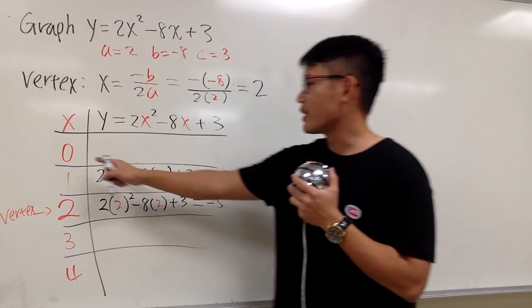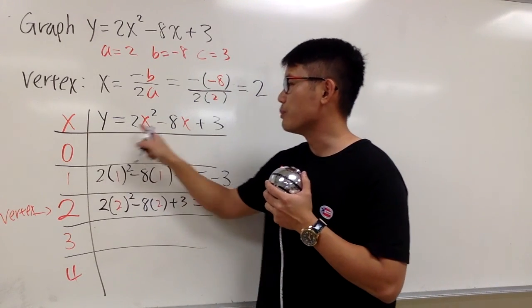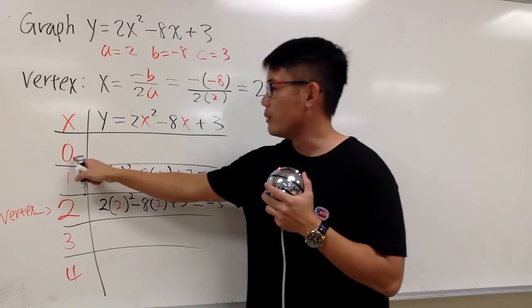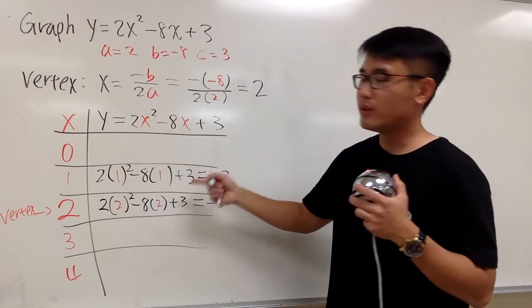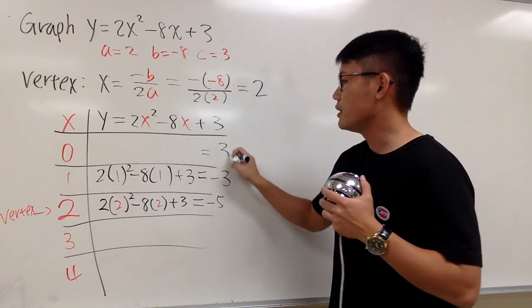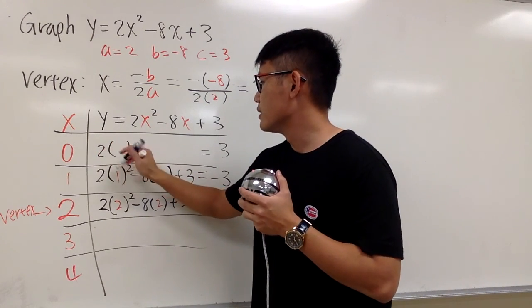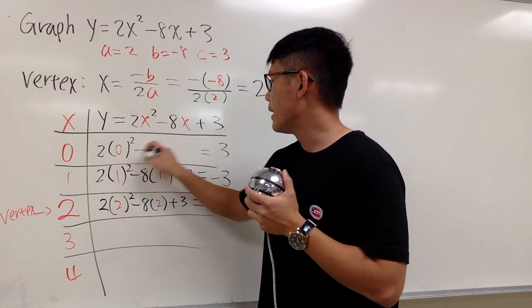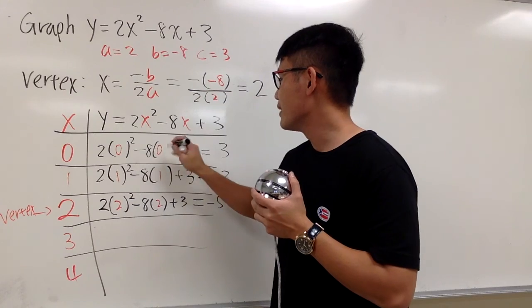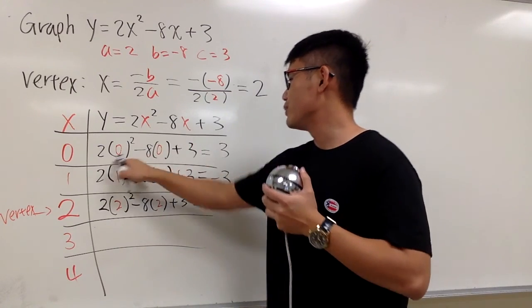And let's work out the 0 right here as well. This right here is very easy, because when you plug in 0, this is just 0. When you plug in 0 into here, it's also 0. So, at the end, you know this is going to be just a 3. And I'll show you guys the work if you would like. So, 2 times 0 squared minus 8 times 0, and then you add a 3 to that. 0, 0, and 3.